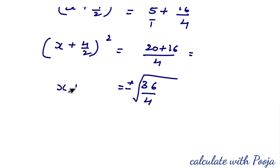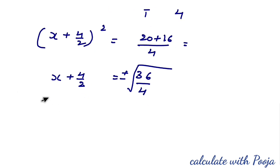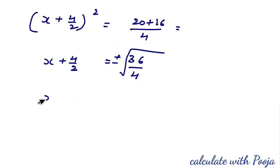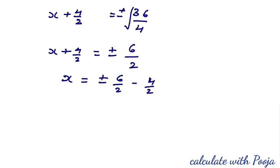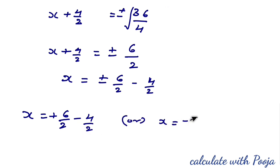Taking square root of both sides: x + 4/2 = ± 6/2. So x = −4/2 ± 6/2. Separating: x = (6/2) − (4/2) = 2/2 = 1, or x = (−6/2) − (4/2) = −10/2 = −5.